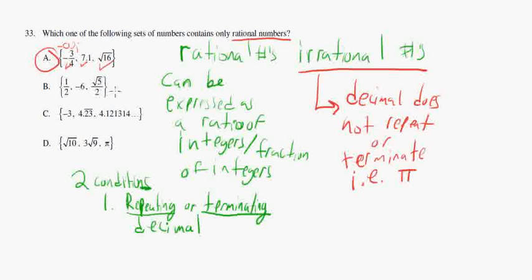And, we don't really have to check the other ones. But, just for completion sake, we will look. In d, I notice there's pi in there. Pi is always irrational. So, d is not an answer.